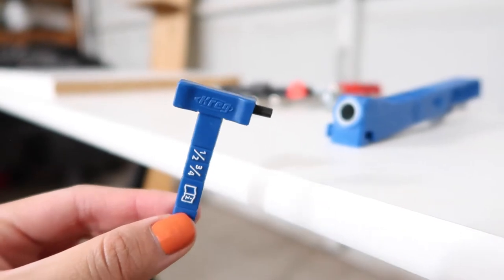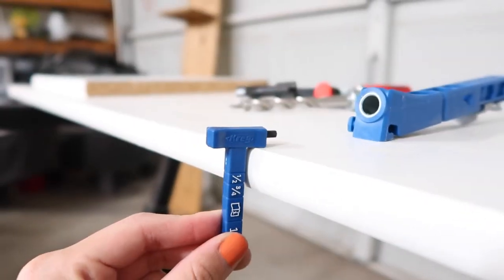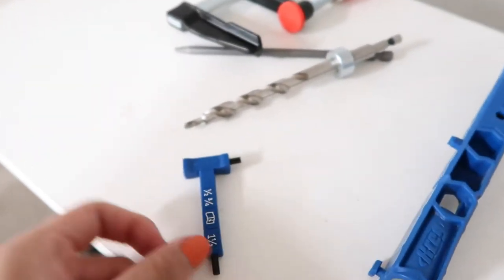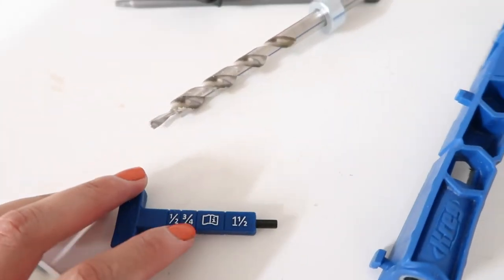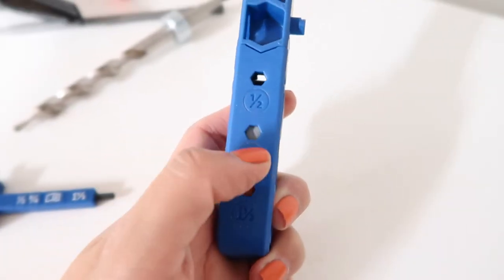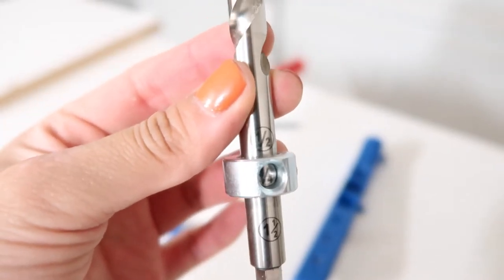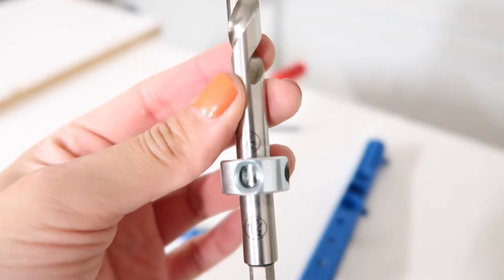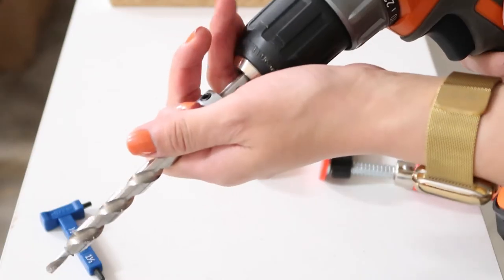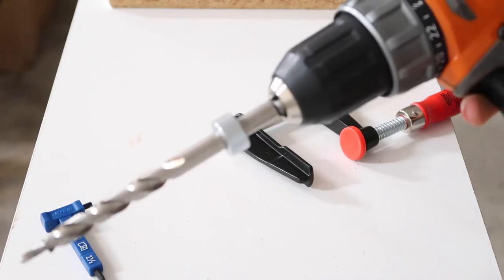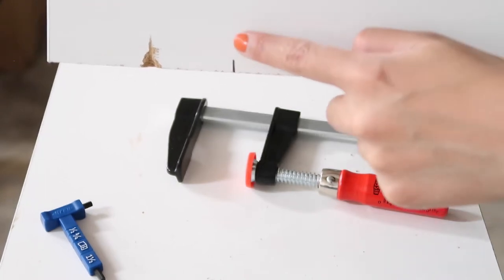And that also has a measurement on there. They all need to be saying the exact same thing. In order to know how far back you need to place your pocket hole jig, you need to measure the thickness of your wood and then adjust all the other pieces to match the exact same thing. So this one will say three fourths, that one also, because that's the thickness of the wood.